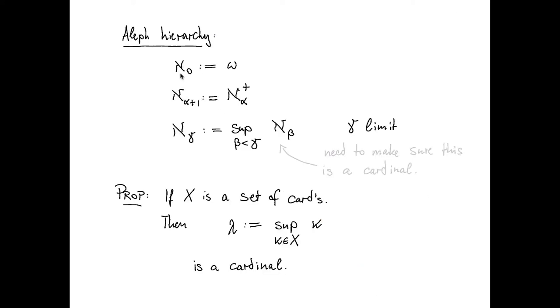Mimicking this process that we did to transfinitely enumerate the ordinals, we can now get a hierarchy for cardinals, which is called the aleph hierarchy. So aleph zero is omega; aleph sub alpha plus one, so this here is always an ordinal, so this is an ordinal, so that would just be the cardinal successor to aleph sub alpha. This would take care of the successor stages, and then we have to take care of the limit stages. And there we would say for gamma limit, we would put aleph sub gamma to be the supremum of the aleph sub beta where beta is less than gamma.